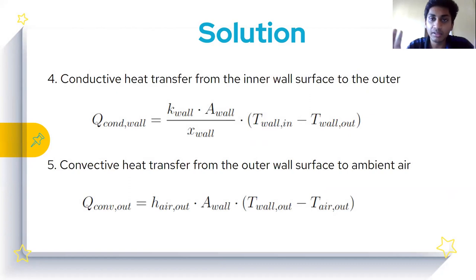Once the heat has reached the walls of the container, it will pass through its surface, and moving across the surface, conduction will occur. Q_conduction equals k of the wall times area of the wall divided by x of the wall, that is the thickness of the wall, times delta T, which is T_wall_in minus T_wall_out.